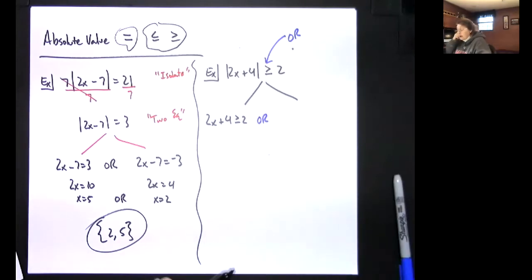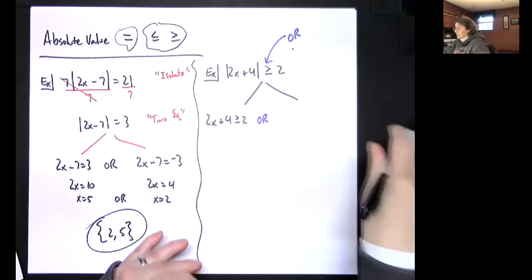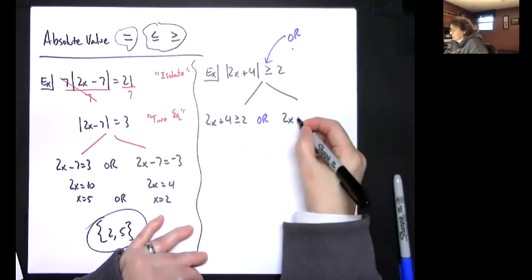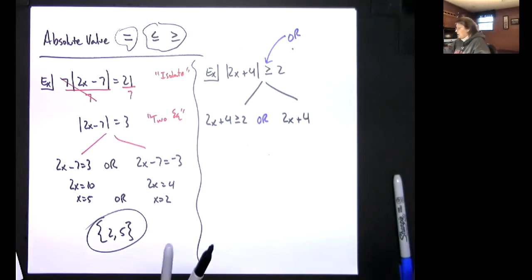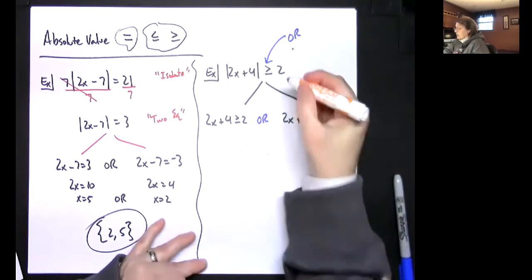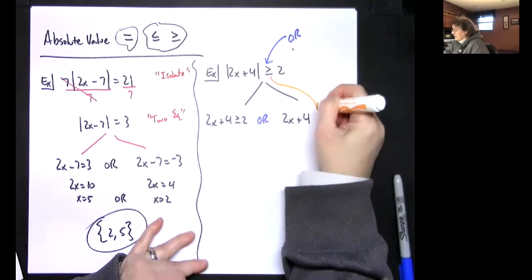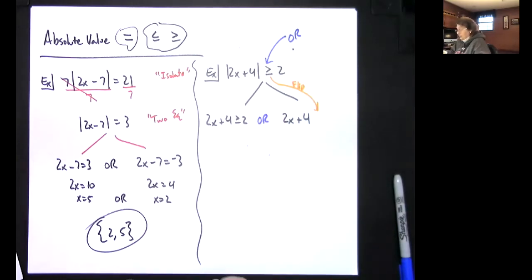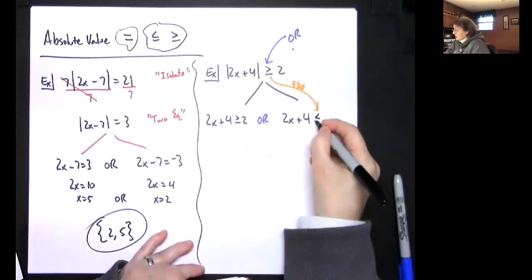Now when we go to break it up the second time around, we drop the bars, so 2x plus 4. And then we have a lot of things we have to remember. We flipped the inequality symbol, so we're going to flip that, so that is then going to become a less than or equal to.